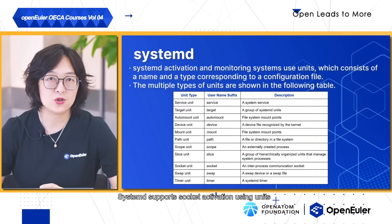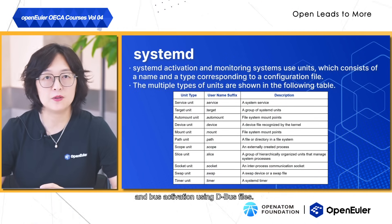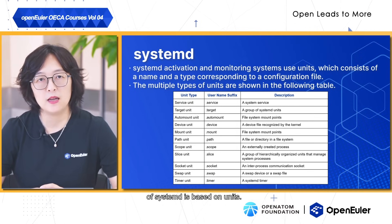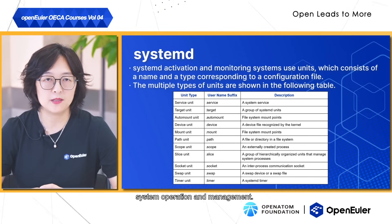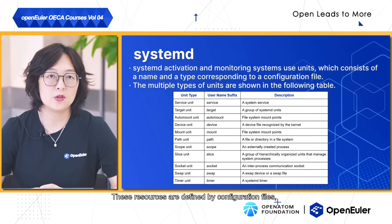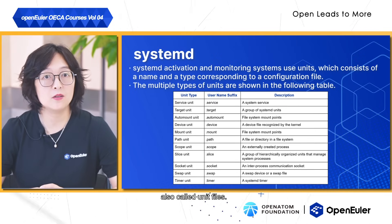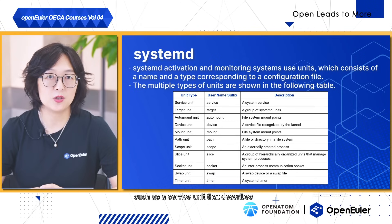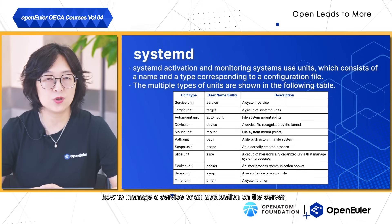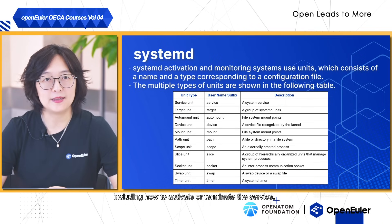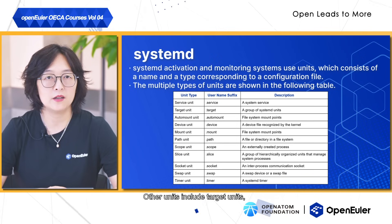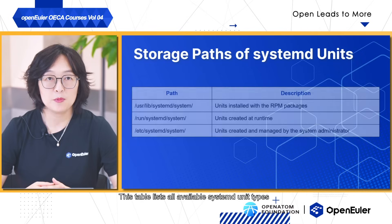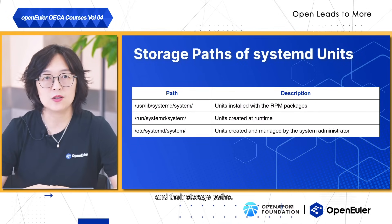System-D supports socket activation using units and bus activation using dbus files. The activation and monitoring system is based on units — a unit is a resource that enables system operation and management, defined by configuration files called unit files. There are many types of units, such as service units that describe how to manage a service, target units, automatic units, device units, and more.